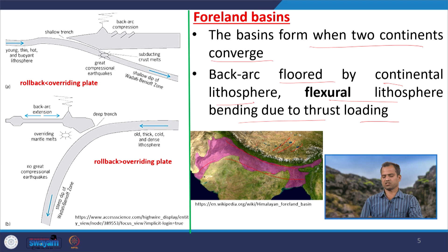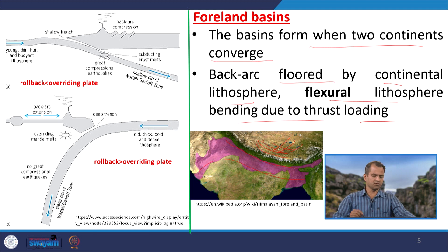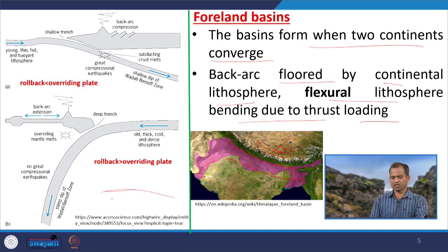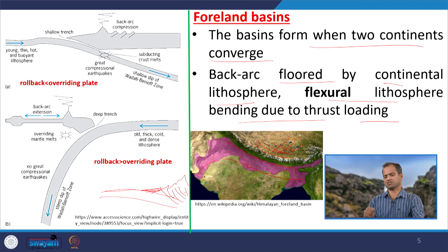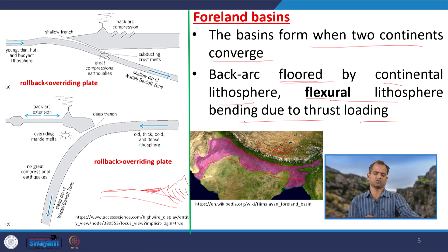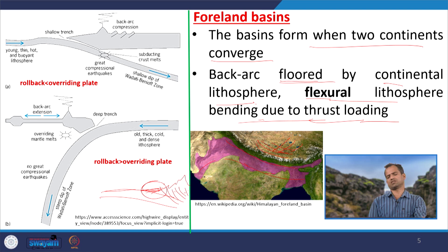We have loading of thrust sheets — the MBT, MFT, and MCT — and there are thousands of thrusts here. Taking a cross-section, we have the Indian lithosphere flexing down, loaded by the MCT, MBT, and whatever thrust sheets are there. Finally, we are creating a sedimentary basin — the Ganga basin or foreland basin — and this is the flexural lithosphere bending due to thrust loading, creating the Indo-Gangetic foreland basin.